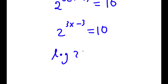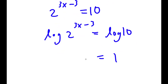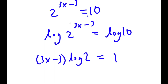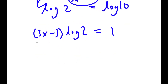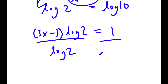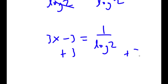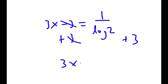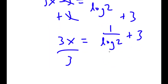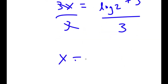Now I'm going to take the log on both sides. So I get log 2 to the power of 3x minus 3 is equal to log 10. And log 10 is equal to 1. So I get 1 is equal to 3x minus 3 times log 2, because I can move this to the front. Now if I divide both sides by log 2, these two cancel out, and I get 3x minus 3 is equal to 1 over log 2. Now I can add 3 on both sides, so I get 3x is equal to 1 over log 2 plus 3. And if I divide both sides by 3, I get x is equal to 1 over 3 log 2 plus 1.